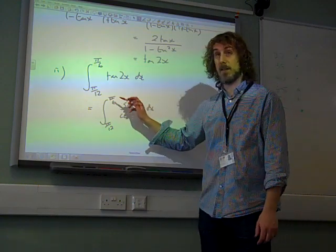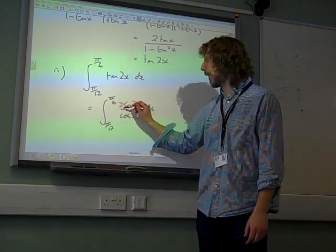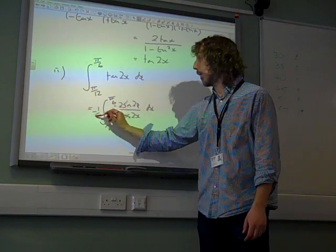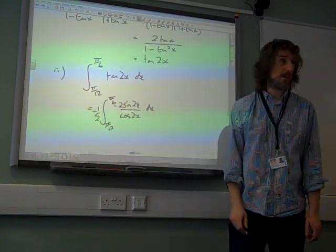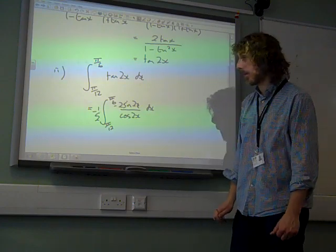The top is very much like the derivative of the bottom, except we need to have a 2 there. It would need to be minus. So let's put a minus a half there to get rid of that, as was once famously called fiddle factor.